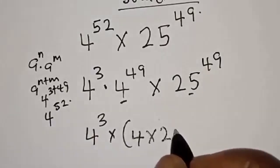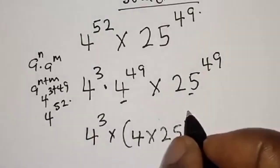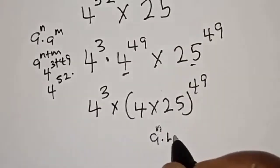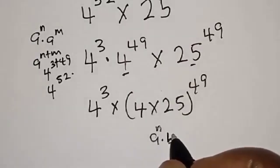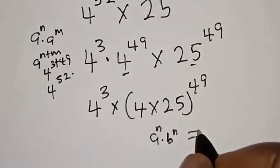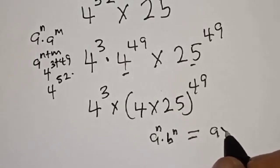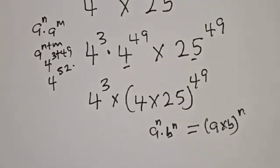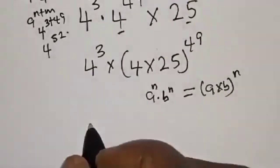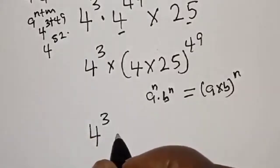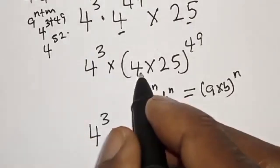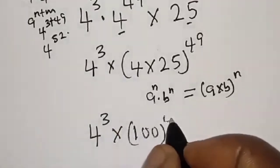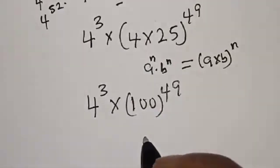So we have 4 raised to power 3 multiplied by 4 times 25, raised to power 49. Since a raised to power n multiplied by b raised to power n equals a multiplied by b raised to power n, we get 4 raised to power 3 times 100 raised to power 49.